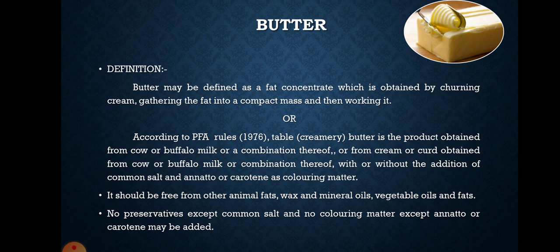The production of creamery butter in India in 1966 was estimated to have been about 6.3 percent of the total milk production and 11.3 percent of the milk used for the manufacture of dairy products. Butter serves as the balance wheel of the dairy industry — surplus milk is converted into butter, while during times of scarcity, milk intended for butter making is used for more essential products.